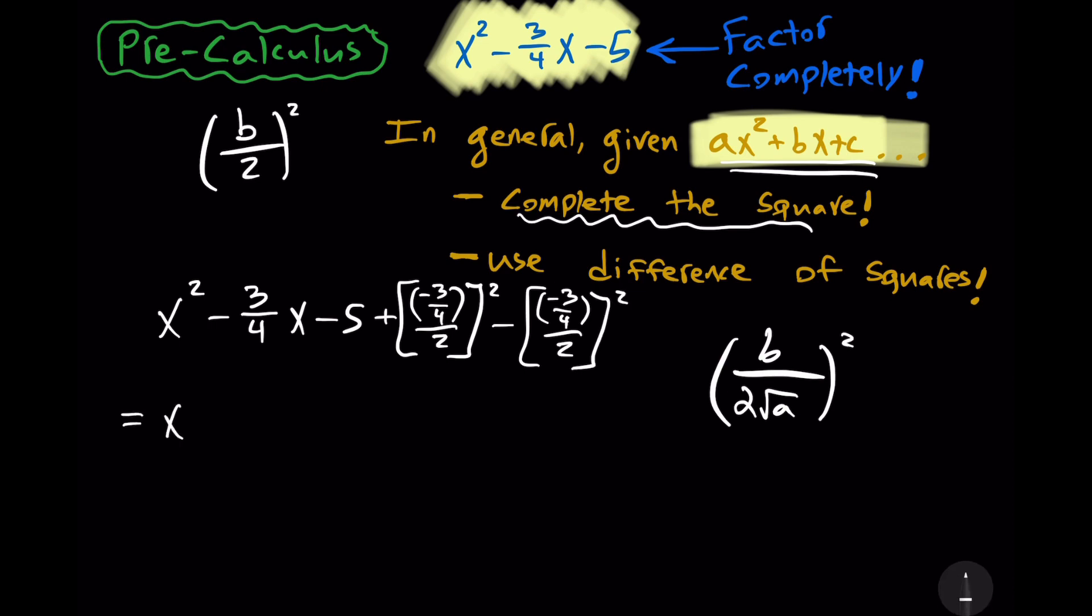So, we have x squared minus 3 over 4x minus 5 plus, so we have minus 3 over 4, and that's really just times 1 half. So, we have minus 3 over 8, that quantity squared, minus minus 3 over 8, that quantity squared.